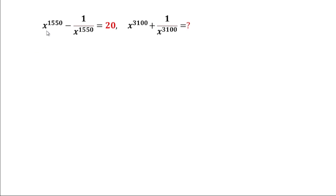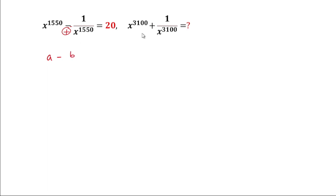Now let us move to another problem. In this question they have given x to the power 1550 minus 1 by x to the power 1550 is equal to 20, and we will have to calculate the value of x to the power 3100 plus 1 by x to the power 3100. Note that 3100 is double of 1550.